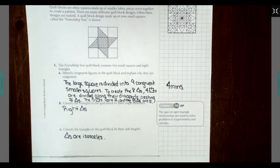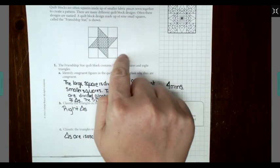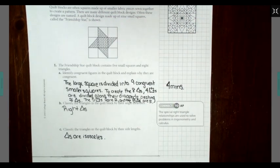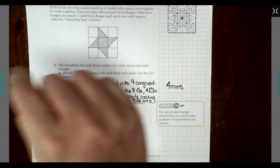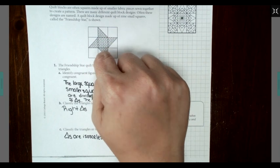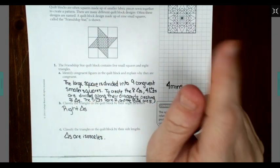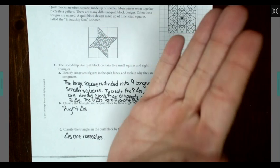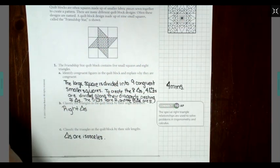All right. As you can see, the answers to questions 1A through C have been provided. I stated that the large square was divided into nine congruent squares. Then four of those squares were divided along their diagonals, which created eight congruent triangles.